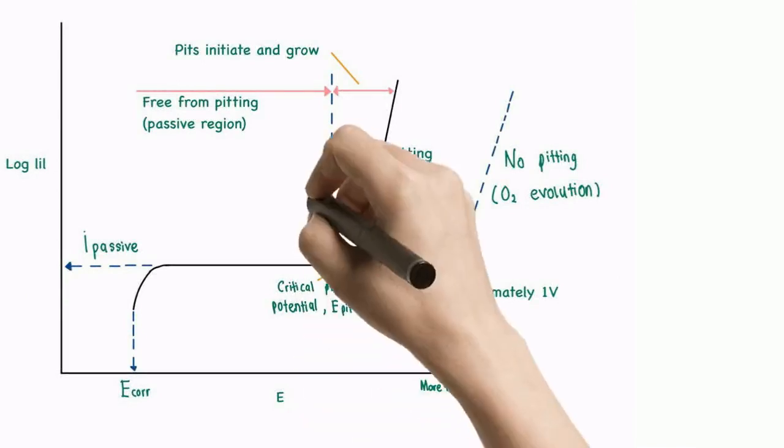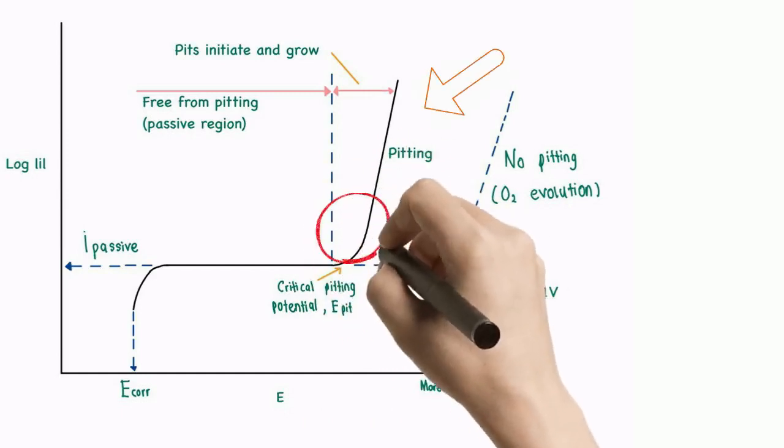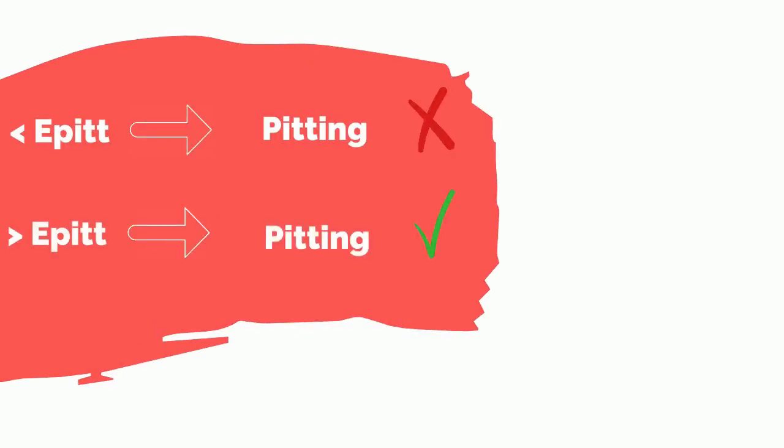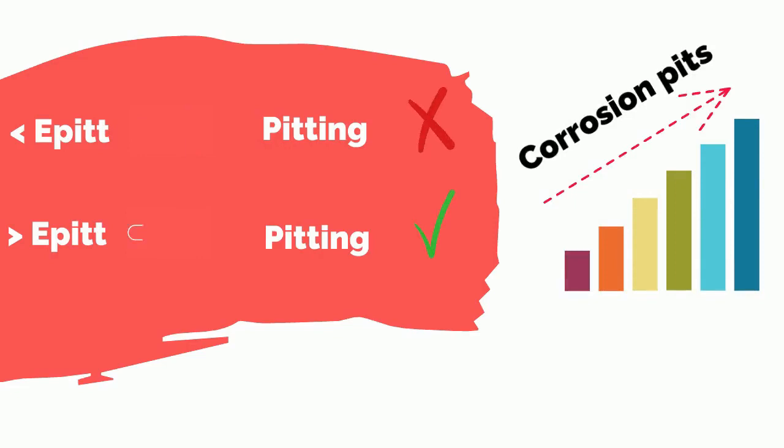If we look at the graph, once the corrosion pits initiate, it will propagate rapidly. Below critical pitting potential, pitting does not occur, while above critical pitting potential, corrosion pits initiate and propagate where current increases with time as corrosion pits initiate and grow.